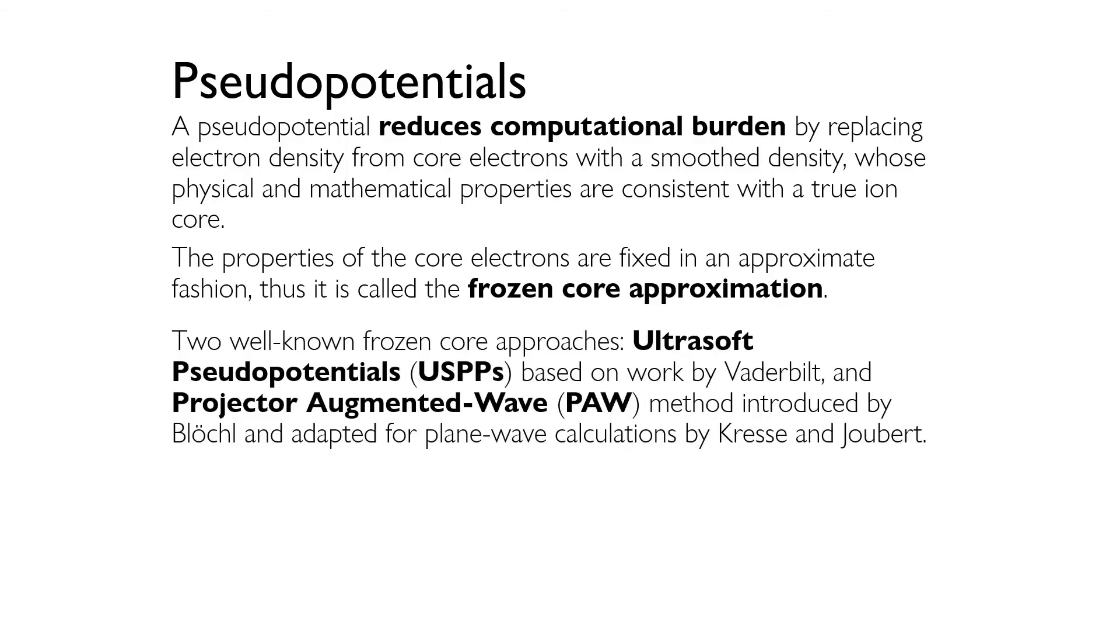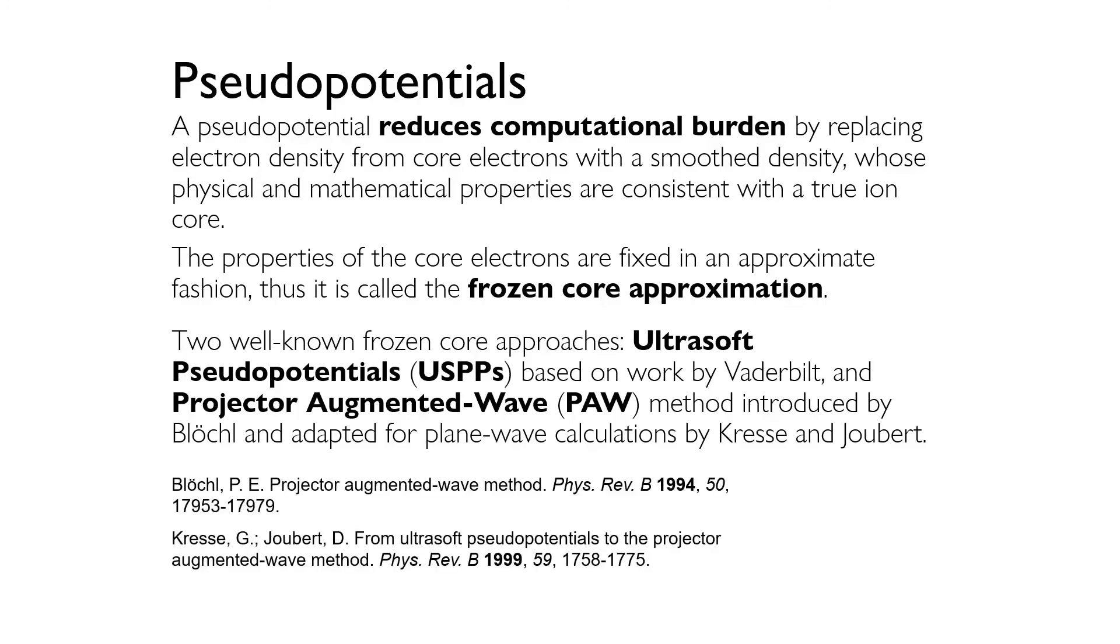There are different ways to construct pseudopotentials for DFT calculations. One of the most widely used methods of defining pseudopotentials is based on the work by Vanderbilt. These are known as the ultra-soft pseudopotentials, or the USPPs. A disadvantage of USPPs is that constructing the pseudopotential for each atom requires a number of empirical factors to be specified. Another frozen core approach that avoids some of the disadvantages of USPPs is the projector augmented wave, or PAW method, originally introduced by Blöchl and adapted for plane wave calculations by Kresse and Joubert. You can find the original references for Blöchl, Kresse, and Joubert's work here. These are the types of pseudopotentials that I've most often made use of when I perform my own DFT calculations.